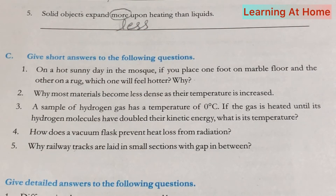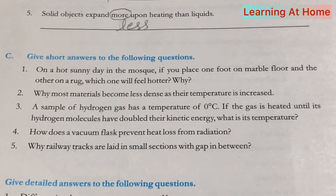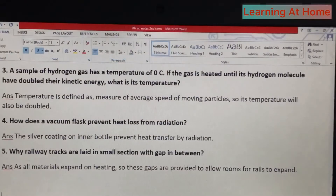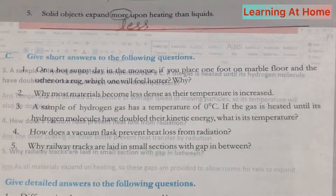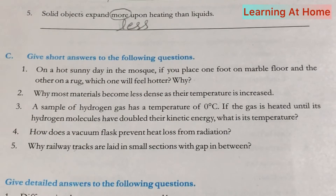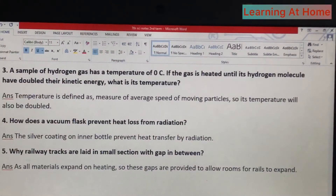Question number three: a sample of hydrogen gas has a temperature of zero degrees centigrade. If the gas is heated until its hydrogen molecules have doubled their kinetic energy, what is its temperature? Temperature is defined as the measure of the average speed of moving particles, so its temperature will also be doubled.